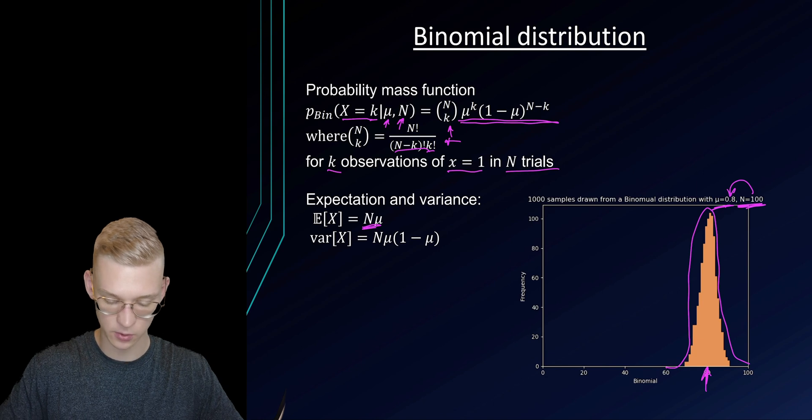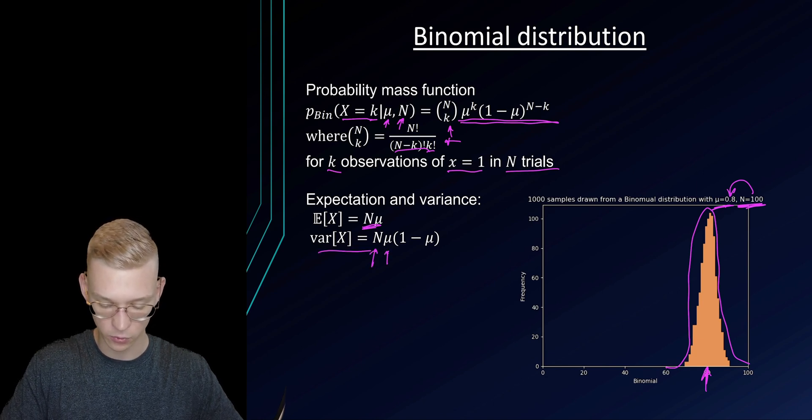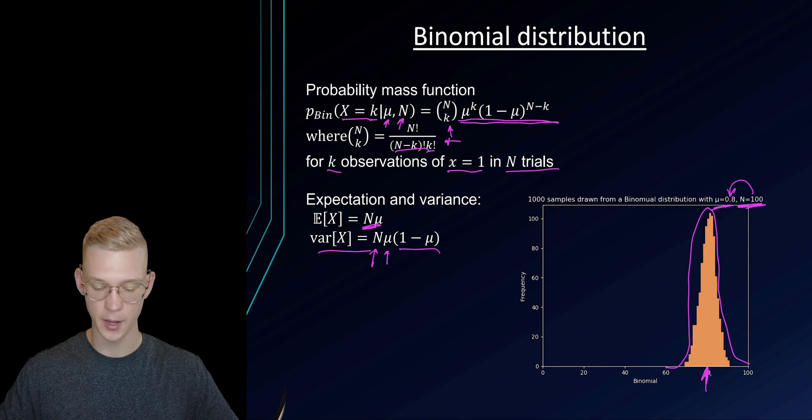The expected value is nu times n and the variance is n times nu times 1 minus nu.